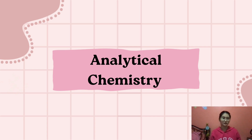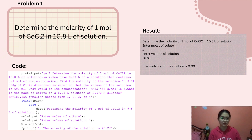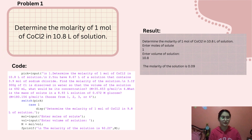Moving on to our next course, which is Analytical Chemistry. I also have four different problems with their codes and answers. For the first problem, determine the molarity of 1 mol of cobalt chloride in 10.8 liters of solution. You enter the moles of solute, which is 1, and the volume of solution, which is 10.8. The molarity of the solution is 0.09.